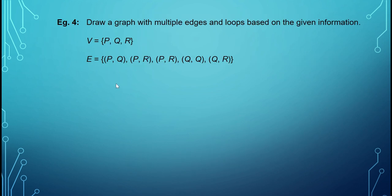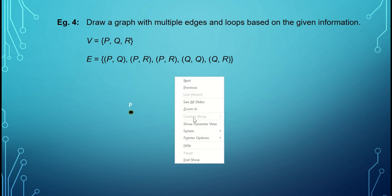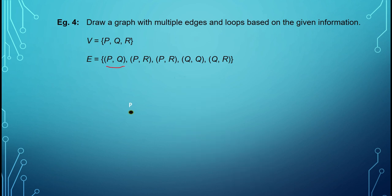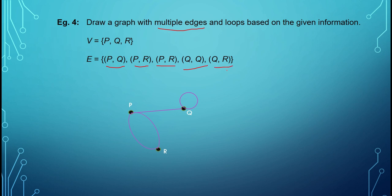Example 4: draw a graph with multiple edges and loops. Vertices are {P, Q, R} and edges are given. Start with a dot for P, add Q and join them for (P,Q). For (P,R) and (P,R) — multiple edges — add a dot for R and join with two curved lines. Q,Q is a loop, so draw a circle at Q. Finally, join Q to R for edge (Q,R).